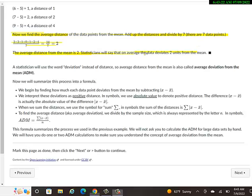Statisticians will say that on average, the data deviates two units from the mean. That's kind of important to keep that language in mind. A statistician will use the word deviation instead of distance. So average distance from the mean is also called average deviation from the mean. That might be something to write down. Average deviation from the mean, ADM.